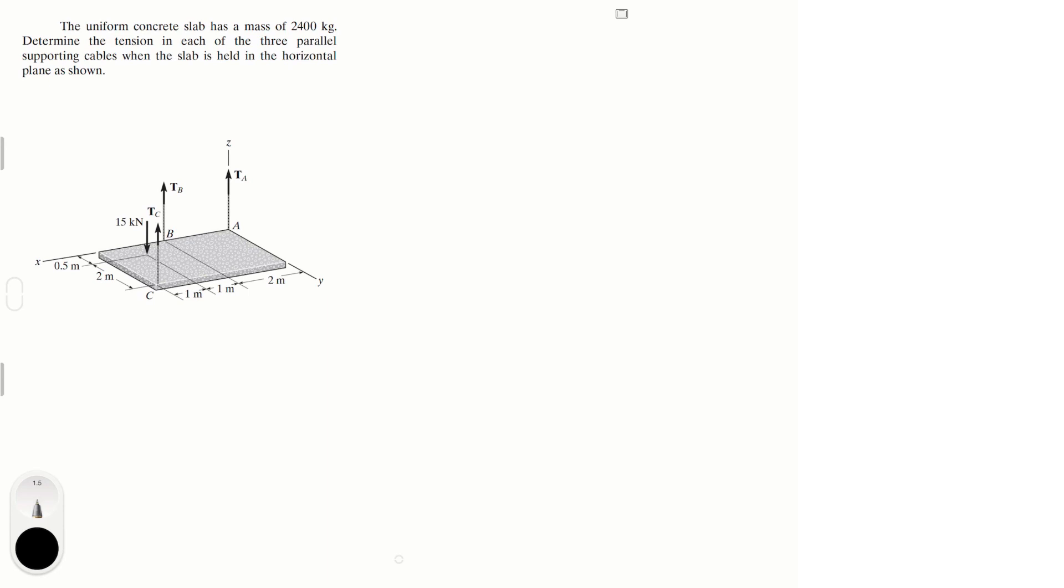So what's important to note in this free body diagram is that it's missing the weight, which is an arrow straight down.